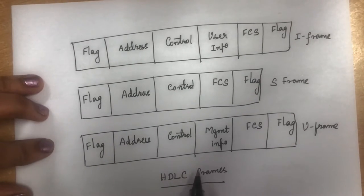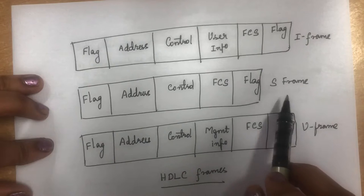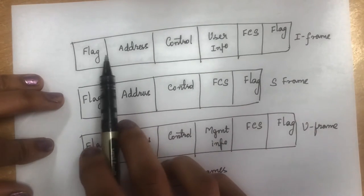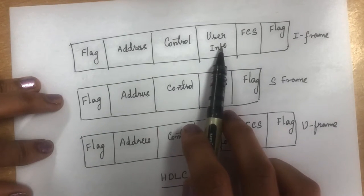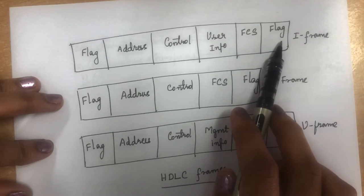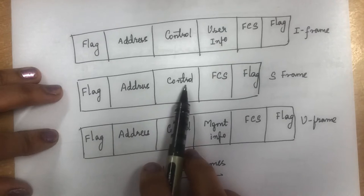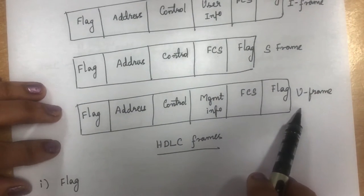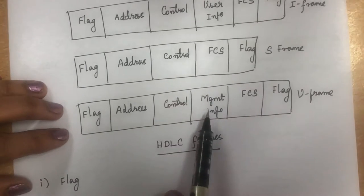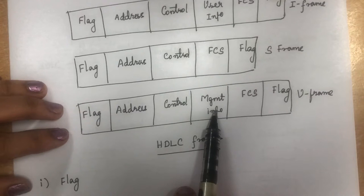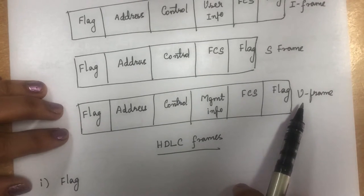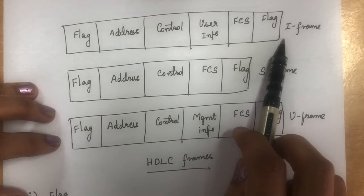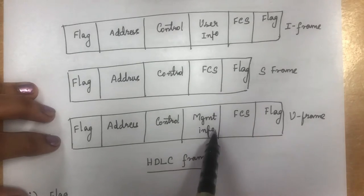Now we will see the HDLC frame formats for I-frame, S-frame, and U-frame. In the Information Frame we have: Flag, Address, Control, User Information, Frame Check Sequence, and Flag. In the Supervisory Frame there is no user information since it is used only for control — so we have: Flag, Address, Control, Frame Check Sequence, and Flag. In the Unnumbered Frame, instead of user information we have management information: Flag, Address, Control, Management Information, Frame Check Sequence, and Flag.